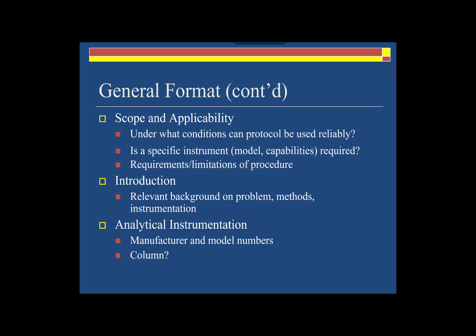The next major section is entitled Scope and Applicability. This section should detail the conditions under which the SOP can be used reliably to carry out the specific procedure. If a specific instrument is required — a specific model with specific capabilities — this information should be provided. Anything that limits the scope of the procedure should be outlined here, including identification of certain reagents, glassware cleaning protocols, and whether plasticware is required. Anything required to obtain the same quality of results should be detailed in the scope and applicability.